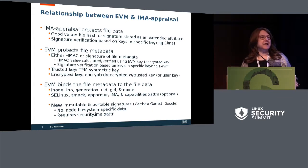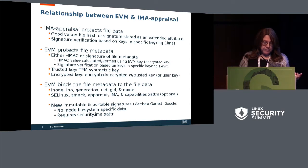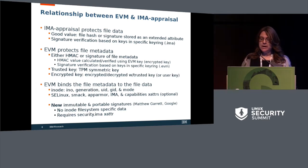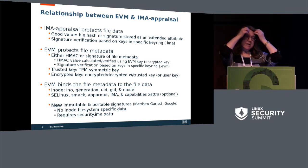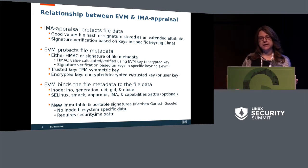IMA appraisal protects the file data based on file hashes that should be distributed with the packages. But we didn't say how the file metadata — the file signatures and hashes — are protected. That's when we come to EVM. EVM protects the file metadata based on an HMAC or signature stored in the extended attribute.